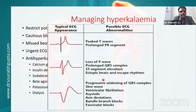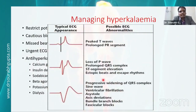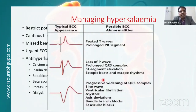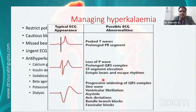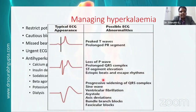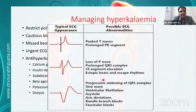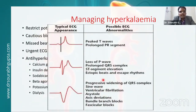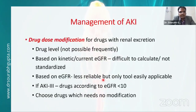ECG changes in hyperkalemia progress from tenting of T waves, prolongation of PR interval, loss of P wave, QRS prolongation, ST segment elevation, ectopic beats, escape rhythms, and finally a sine wave pattern.